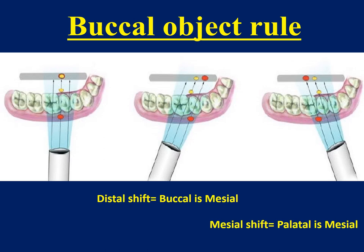The buccal object rule is very important so that we understand which structure is nearer to us and which is further from us. We can do that by shifting the X-ray cone either distally or mesially. For example, if I shift mesially, the most mesial canal on the film will be the palatal, then the distal, then the buccal. But if I shift to the distal, the most mesial will be the buccal, then the palatal.